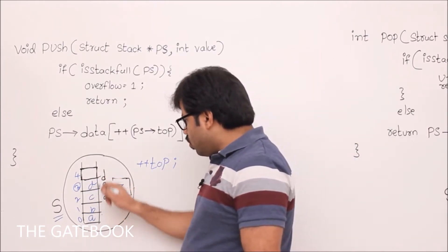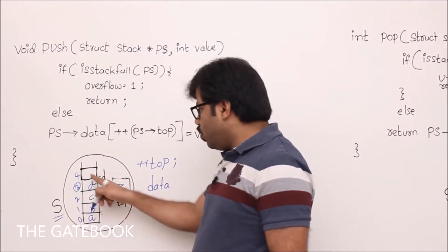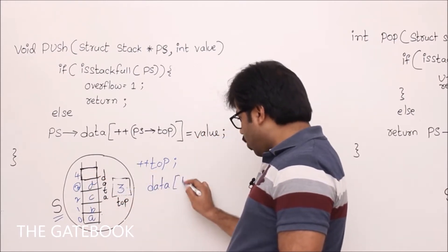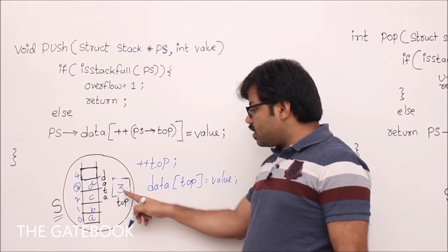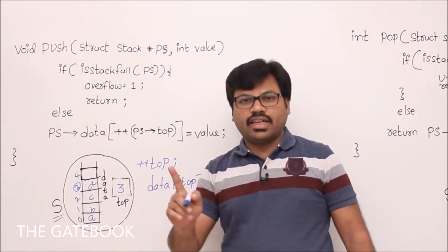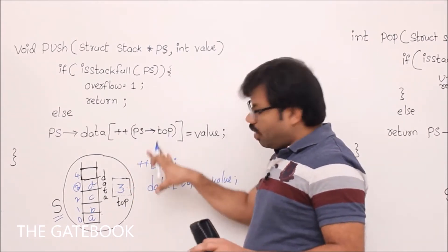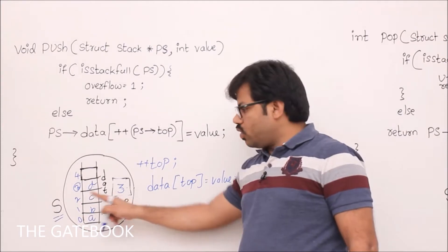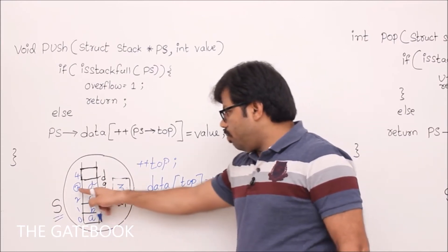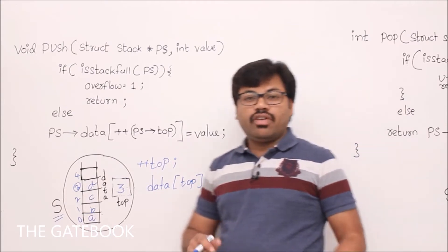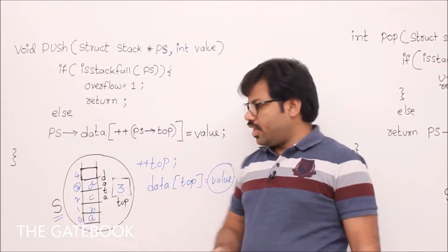After incrementing top, it becomes 4. Then you want to go to the array named 'data' at that position. That position is the current top, so: data[top] = value. Whenever we call the push function, it gives us some value to be pushed. For example, that value is E, then E will be stored because of this line.